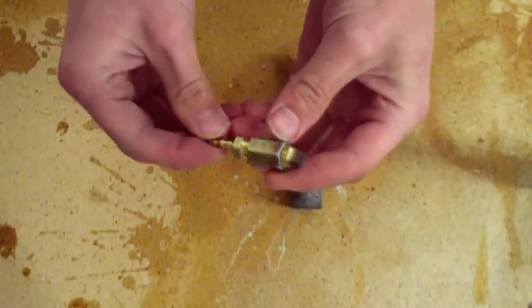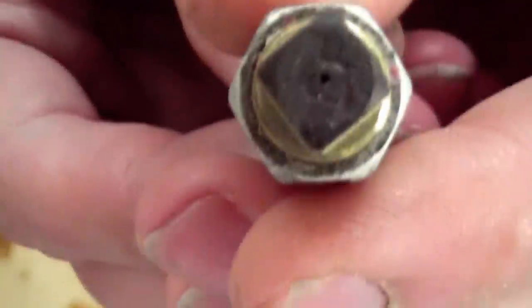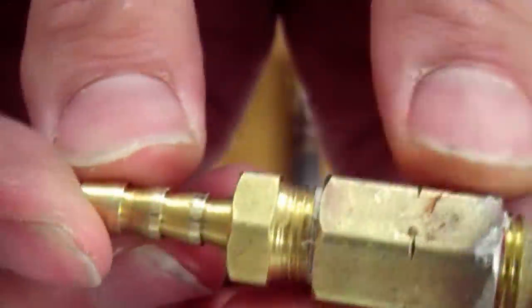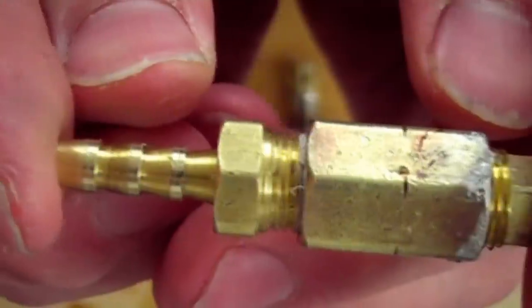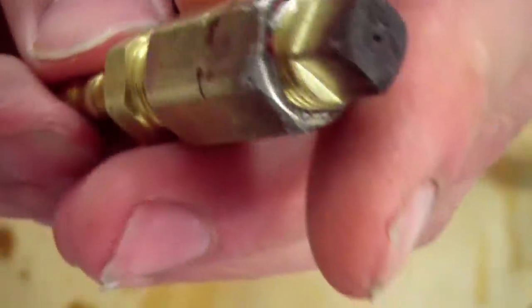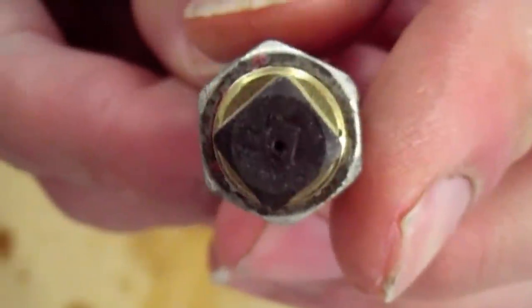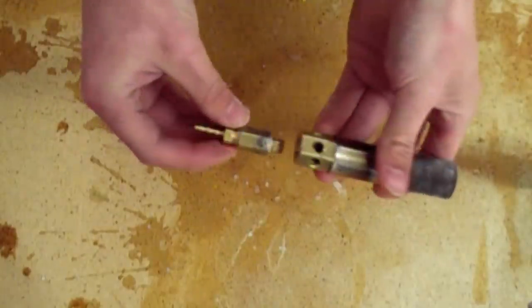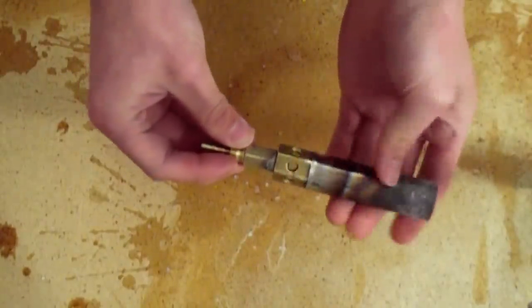Here you can see the orifice, which is a 1⁄8 MPT plug with a hole drilled in it, a 1⁄8 coupler and a 1⁄8 hose bar. It simply screws onto the back of this assembly.